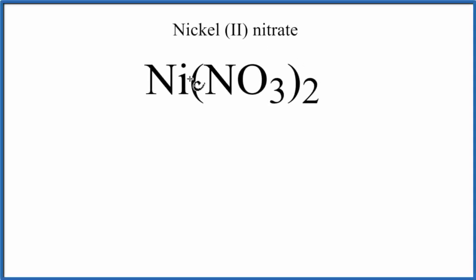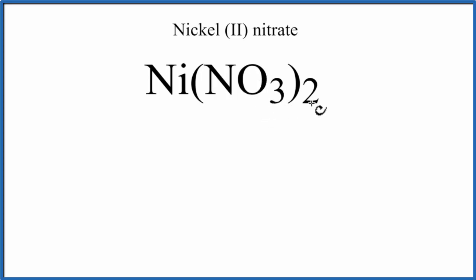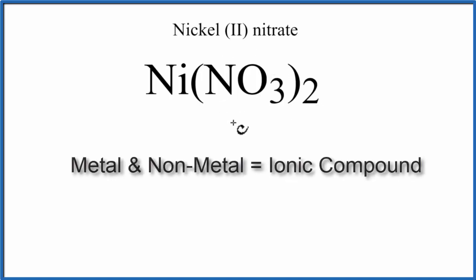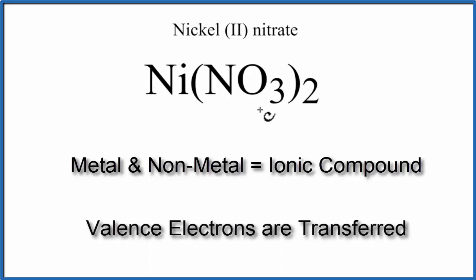In this video, we'll write the Lewis structure for Ni(NO₃)₂, nickel two nitrate. Nickel is a metal, and then N and O are non-metals. They're a group of non-metals tightly bonded together called a polyatomic ion — it's called the nitrate ion, and we have two of these nitrate ions. So we have a metal and non-metals; that is an ionic compound, and the metal will transfer electrons to the non-metals.